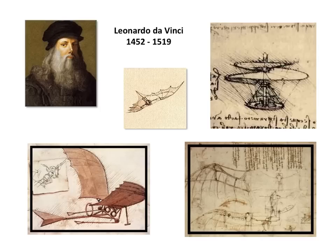Leonardo da Vinci was an Italian who mastered many different disciplines. He was a painter, sculptor, architect, musician, mathematician, engineer, inventor, anatomist, geologist, cartographer, botanist, and writer. For the history of aviation, he contributed by designing a multitude of mechanical devices, including parachutes, and by studying the flight of birds as well as their structure.